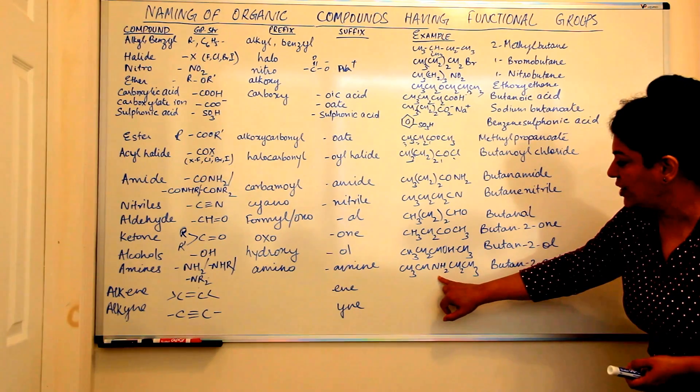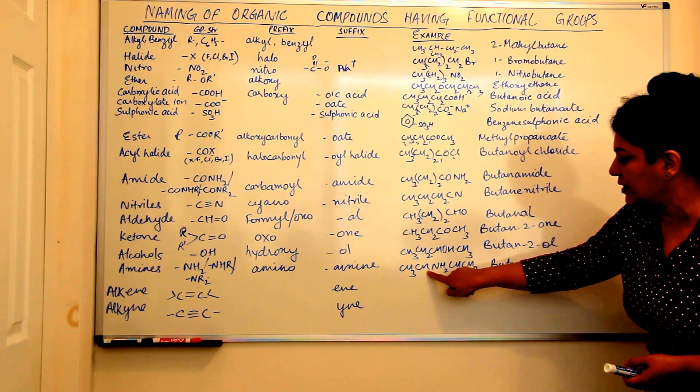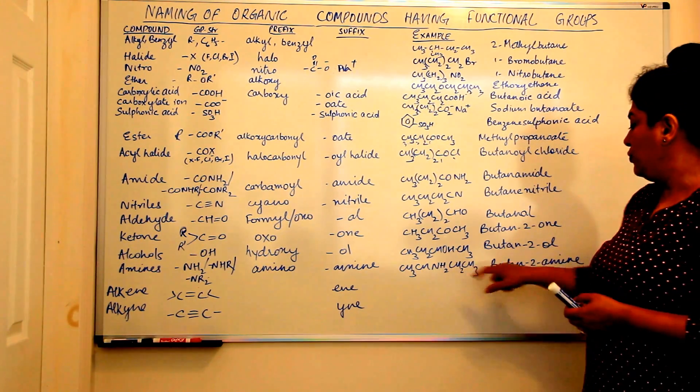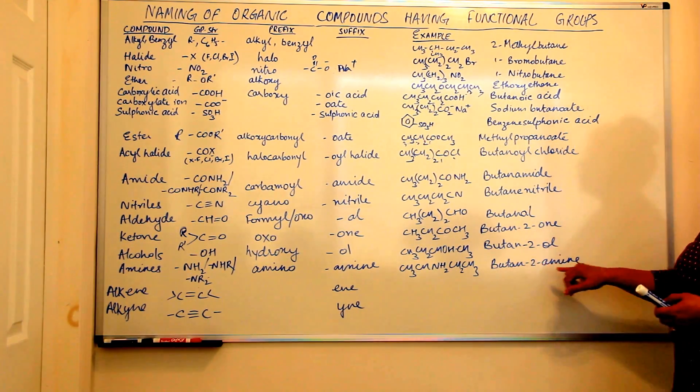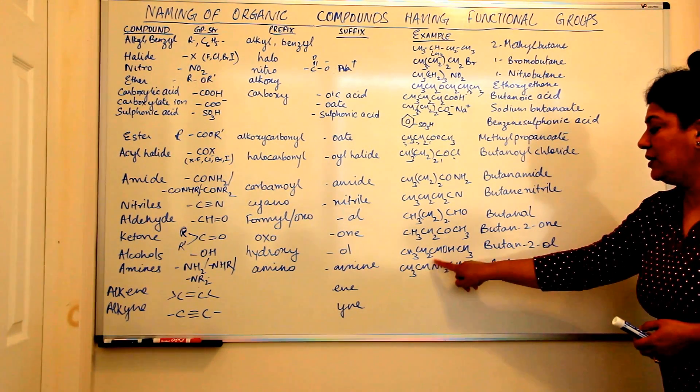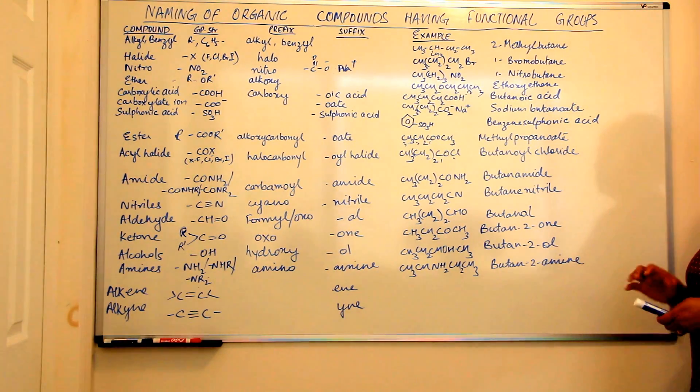CH3, CH, NH2, CH2, CH3. One of the hydrogens here has been replaced by the NH2. So this compound would be named as butane-2-amine, where 2 represents the position of the functional group. It is the locant. Butane-2-amine.